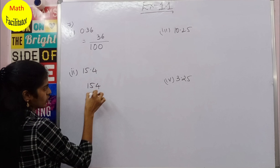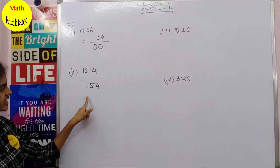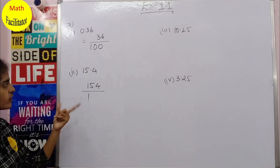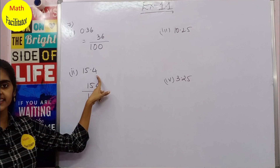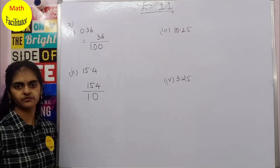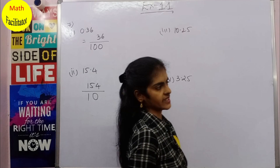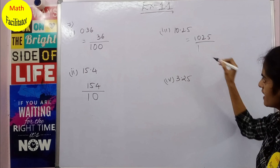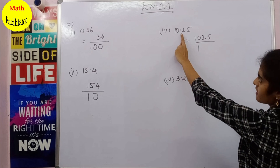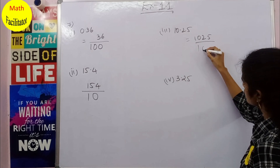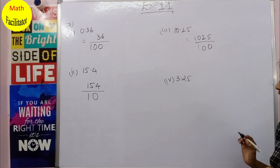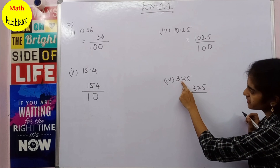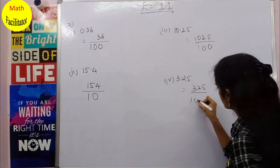For 1.54: ignore the decimal to get 154, and there is one decimal place, so divide by 10 → 154/10. For 10.25: the number is 1025 and there are 2 decimal places, so it is 1025/100. For 3.25: similarly 325 divided by 100, since there are 2 decimal places.